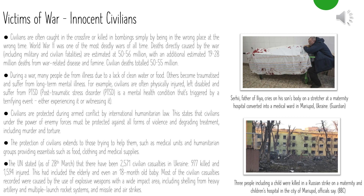International humanitarian law states that civilians under the power of enemy forces must be protected against all forms of violence and degrading treatment, including murder and torture. The protection of civilians extends to those helping them, such as medical units and humanitarian groups like the Red Cross. As of the 28th of March, the UN stated there had been at least 2,571 civilian casualties in Ukraine — 977 killed and over 1,500 injured, including the elderly and an 18-month-old baby. Most civilian casualties were caused by explosive weapons with wide impact areas, including heavy artillery, multiple launch rocket systems, missiles and airstrikes.